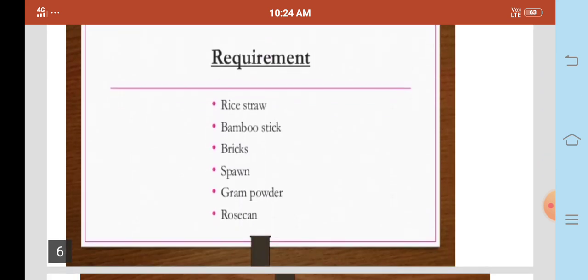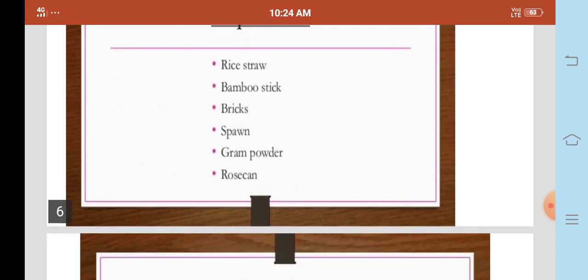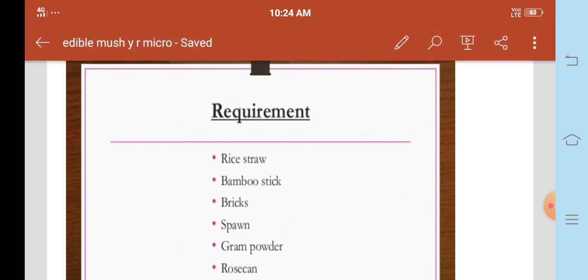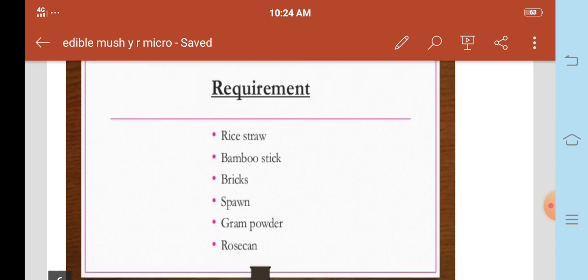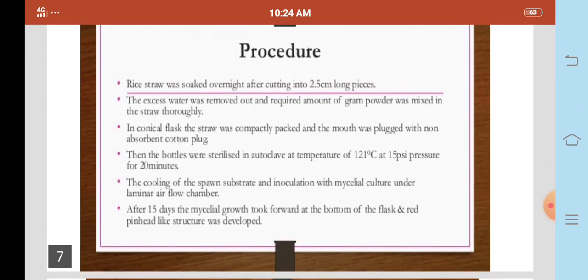Requirements: rice straw, bamboo sticks, bricks, spawn, gram powder, rose can. Procedure: rice straw was soaked overnight after cutting into 2 to 3 cm long pieces.